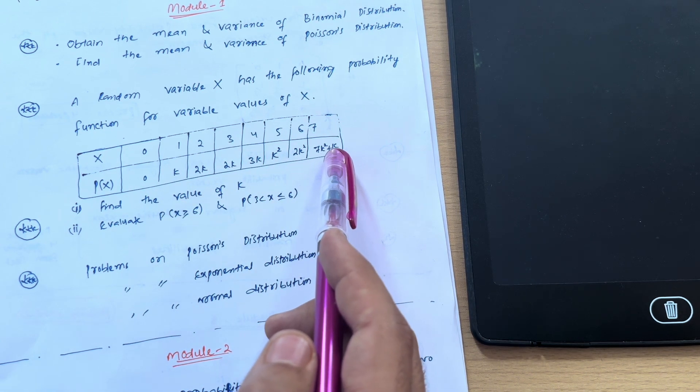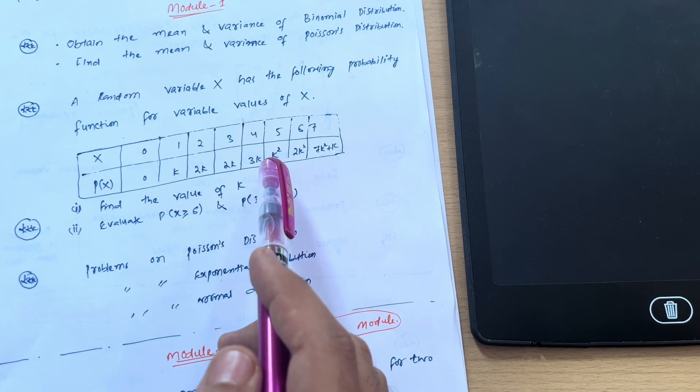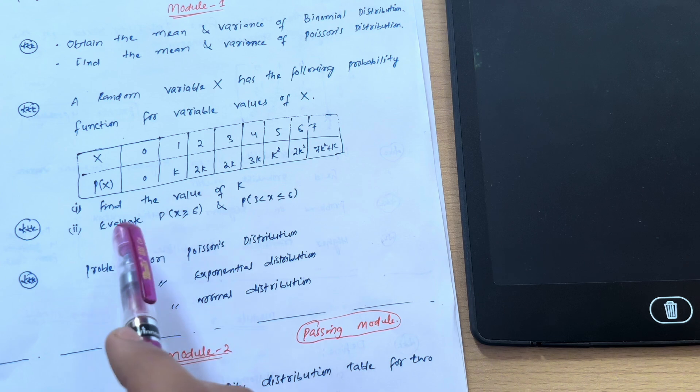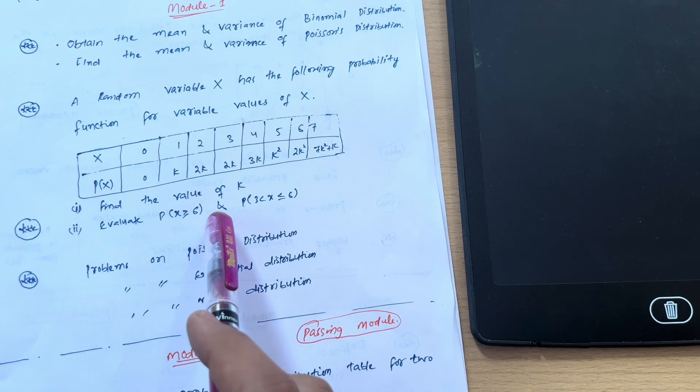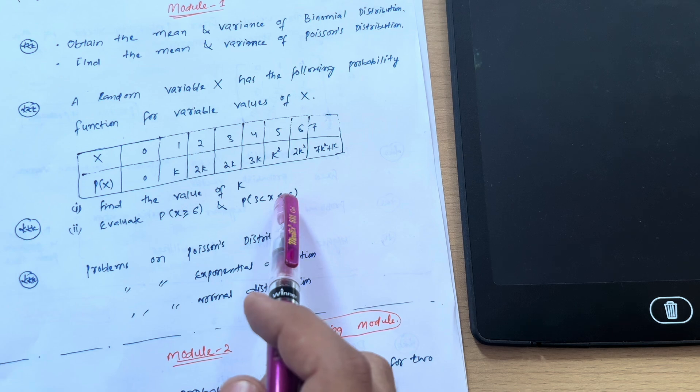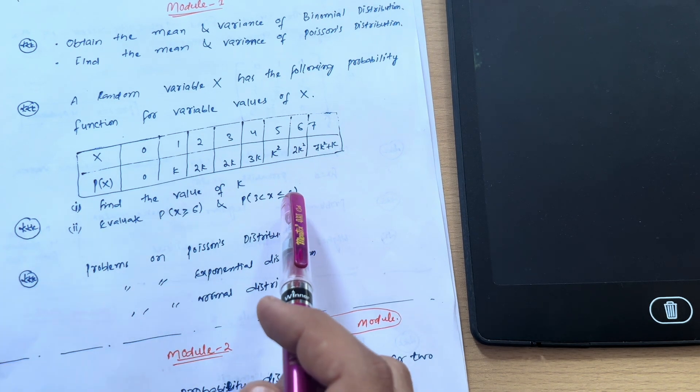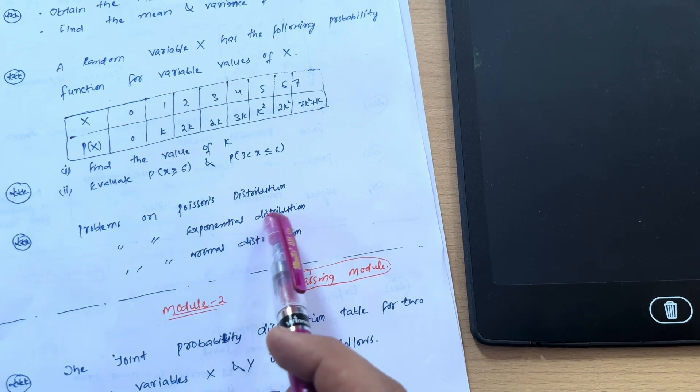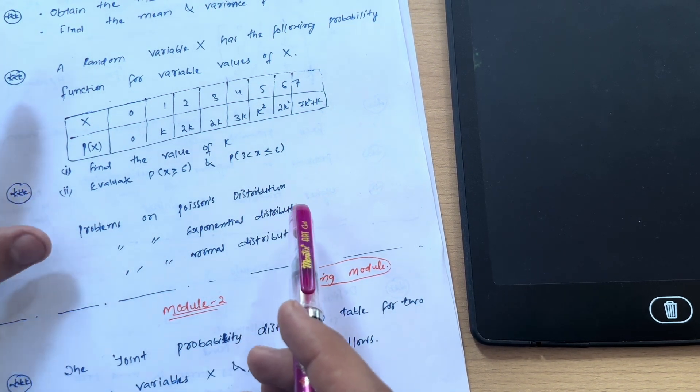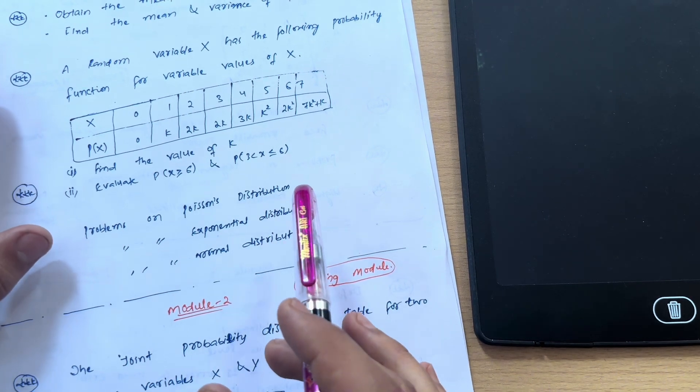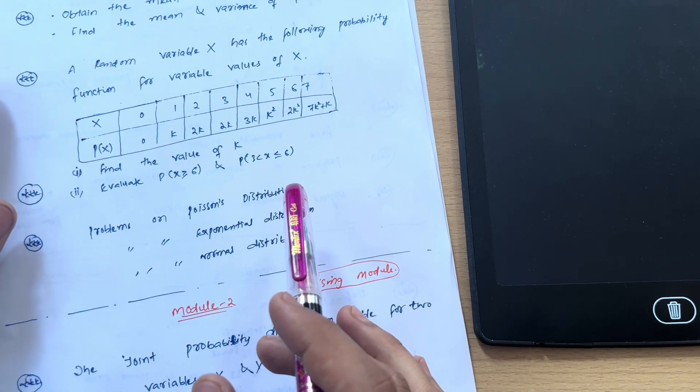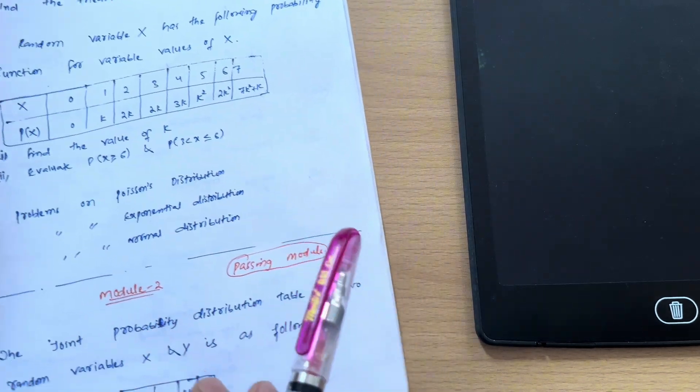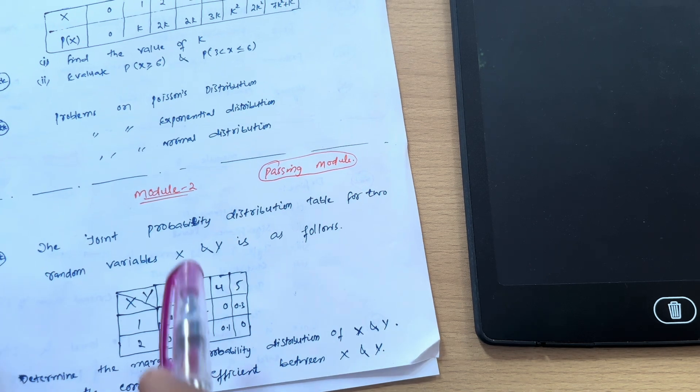X values are given, this is the random variable and its probabilities are given: 0, k, 2k, 2k, 3k, k square, 2k square, 7k square plus k. Most of the times VTU has asked this question irrespective of the schemes. You have to find out the value of k and evaluate probability of X greater than or equal to 6 and P of X less than or equal to 6. Next we have problems on Poisson's distribution, exponential distribution, and normal distribution. This is all about Module 1. I'm not considering this as a passing module, so it depends upon your preparation and practice.